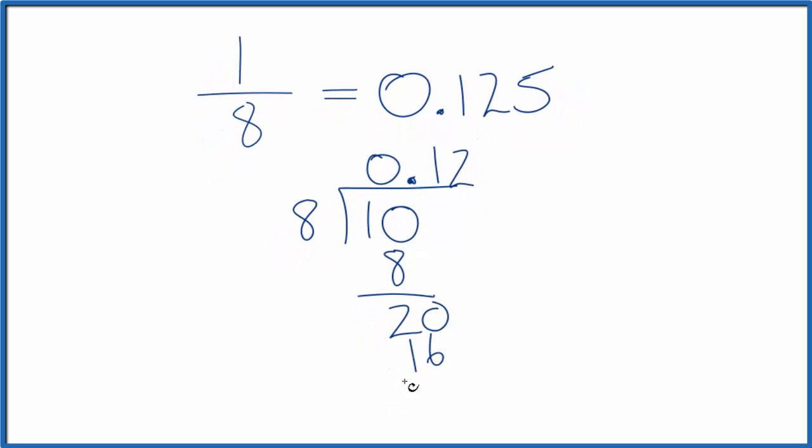2 times 8 is 16, that gives us 4. Make that 40. We move over 1. 8 times 5, that would give us 40.